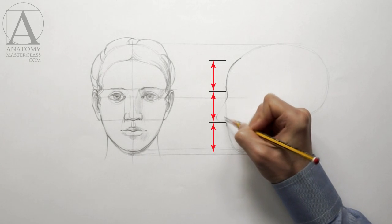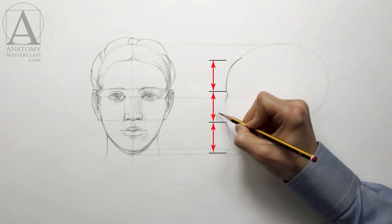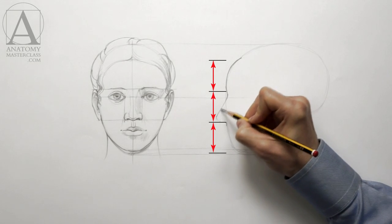The distance between the hair line, the eyebrow line, the base of the nose, and the bottom edge of the chin are equal.